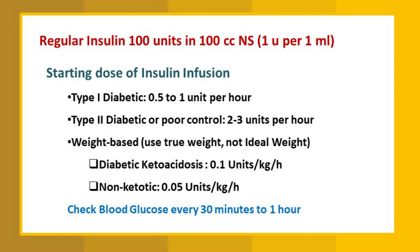There is also weight-based dosing, where true weight is taken — not ideal weight. For diabetic ketoacidosis, 0.1 units per kg per hour is preferred, and for non-ketoacidosis, 0.05 units per kg per hour. So basically, for Type 1 diabetes we start with a very low dose, and for Type 2 diabetes it can be 2 to 3 units per hour.